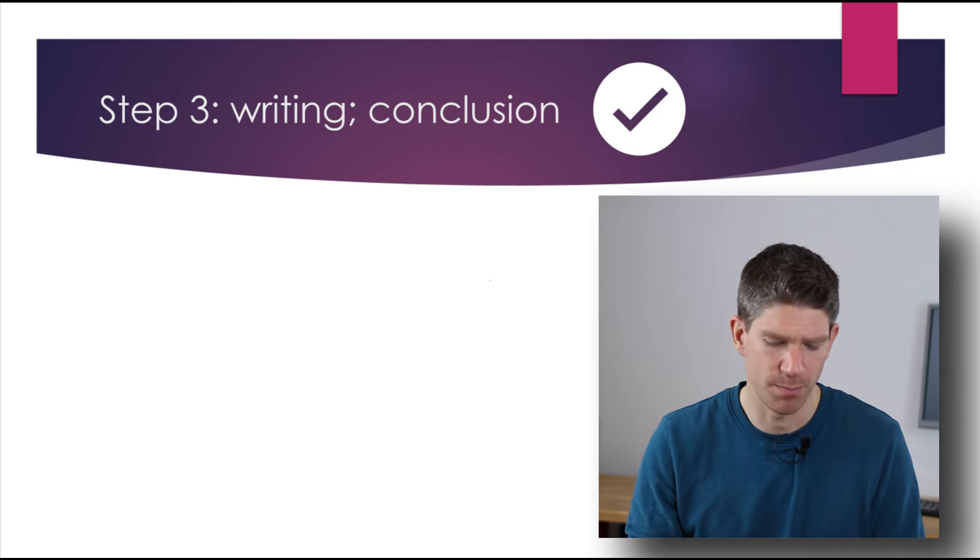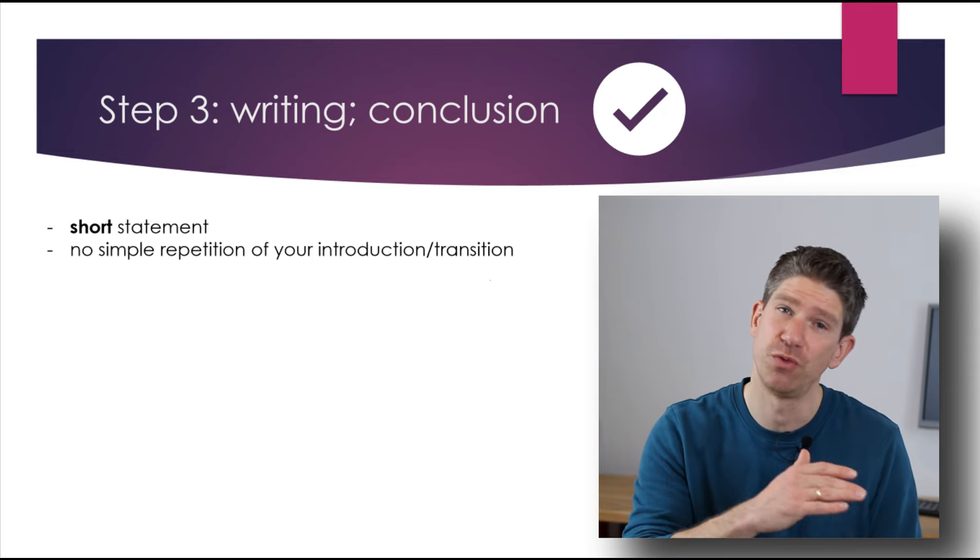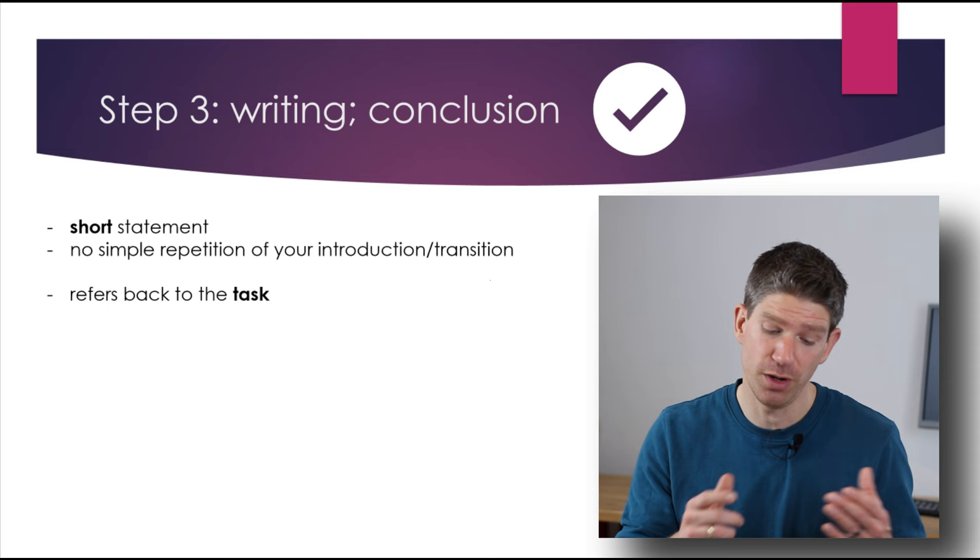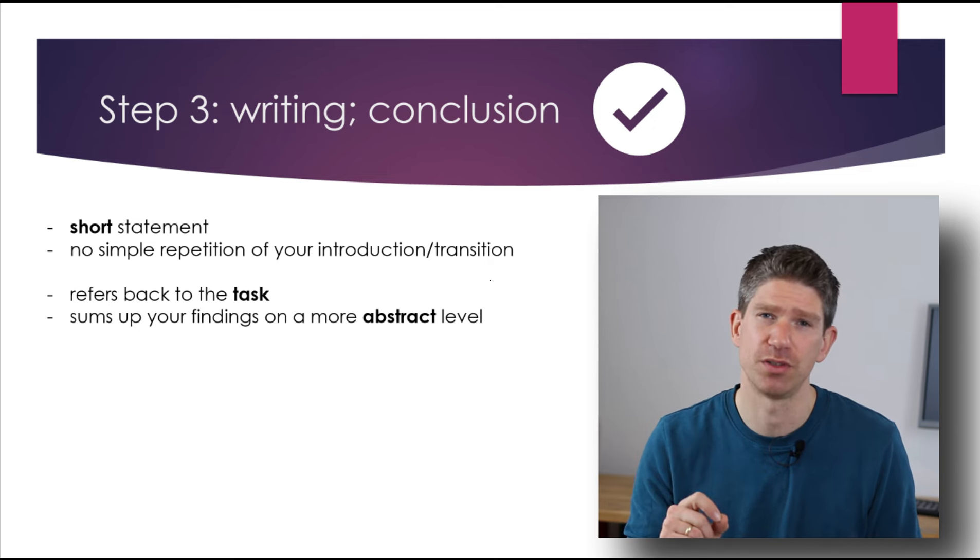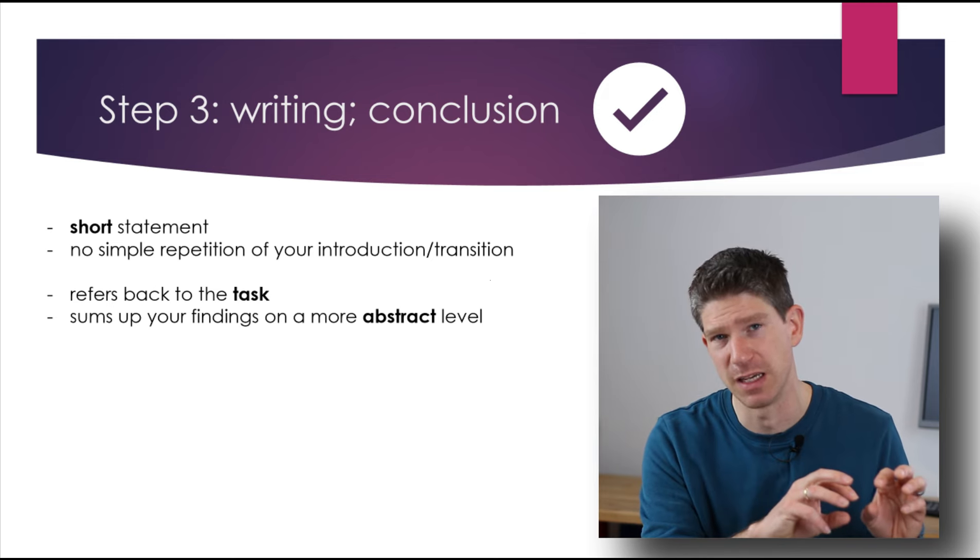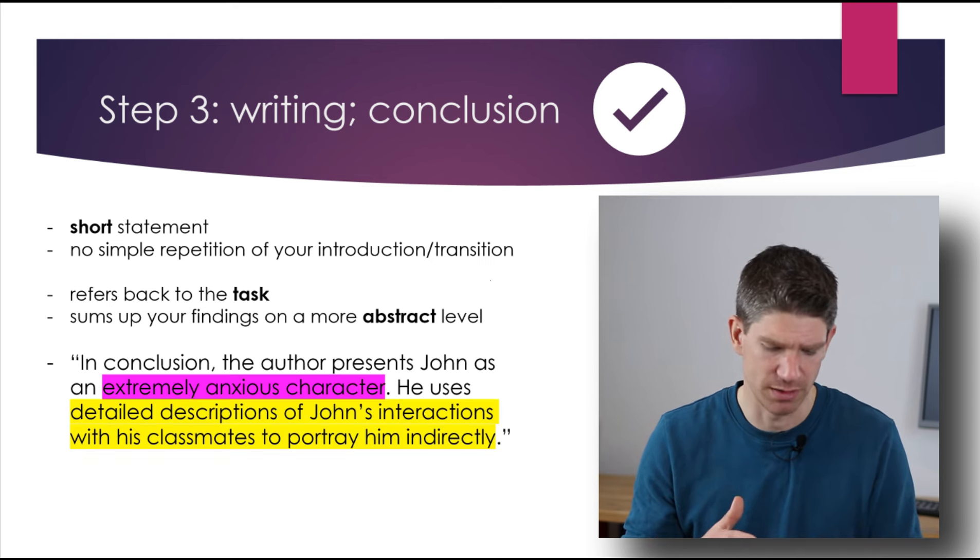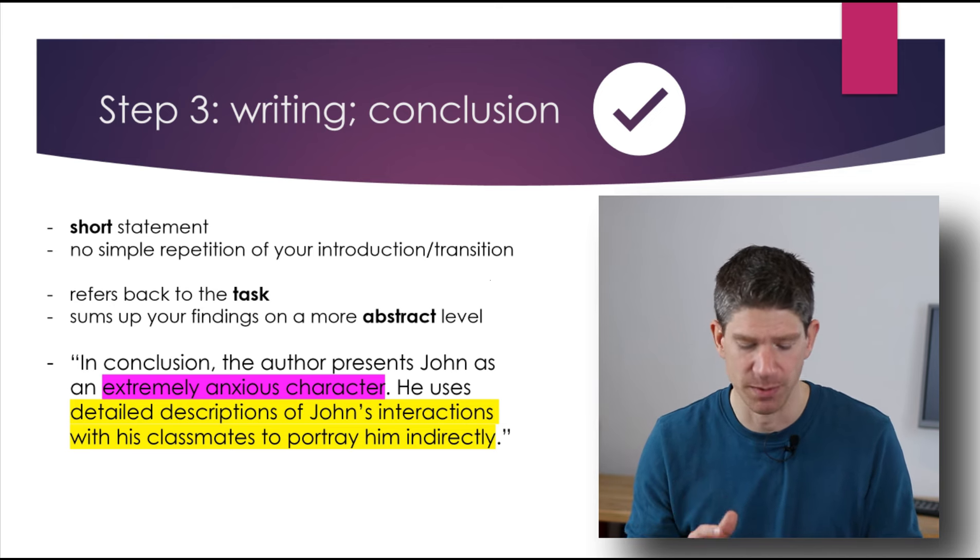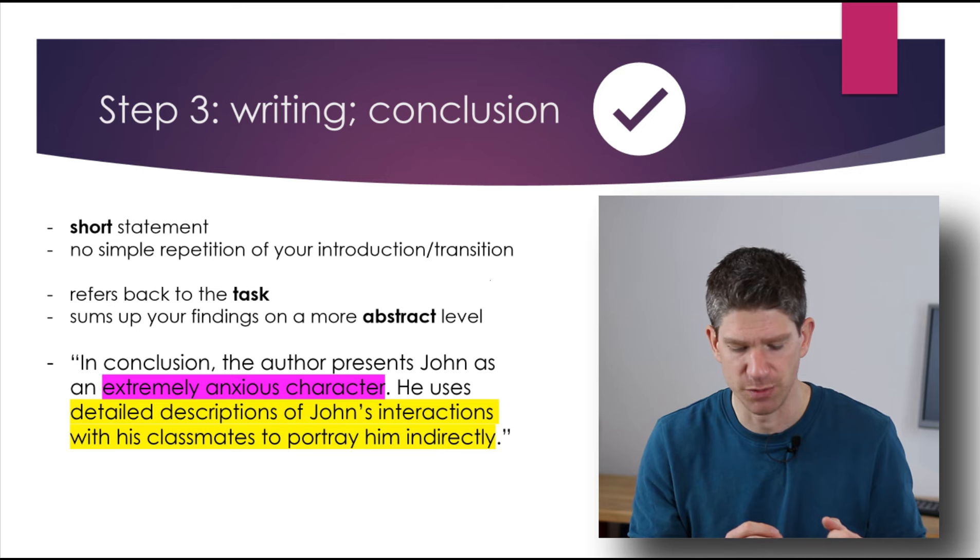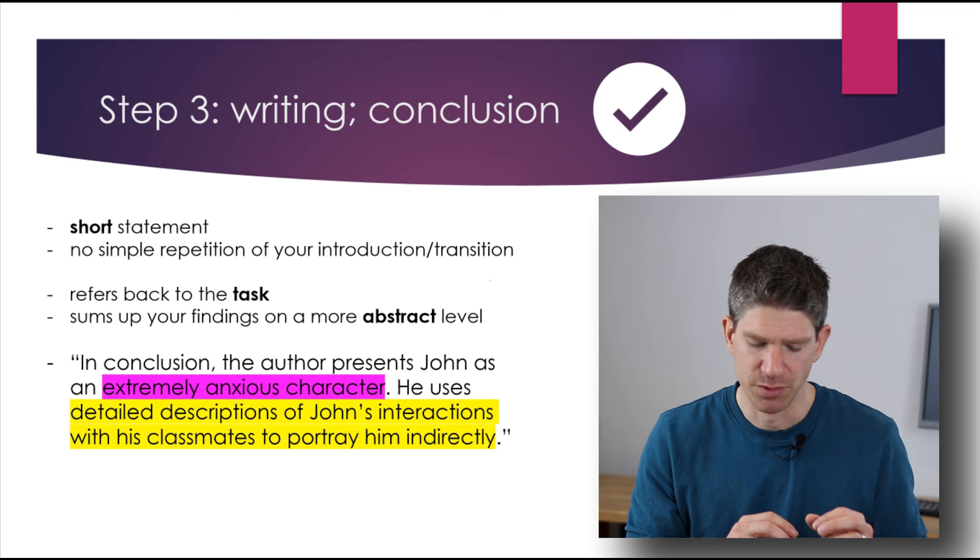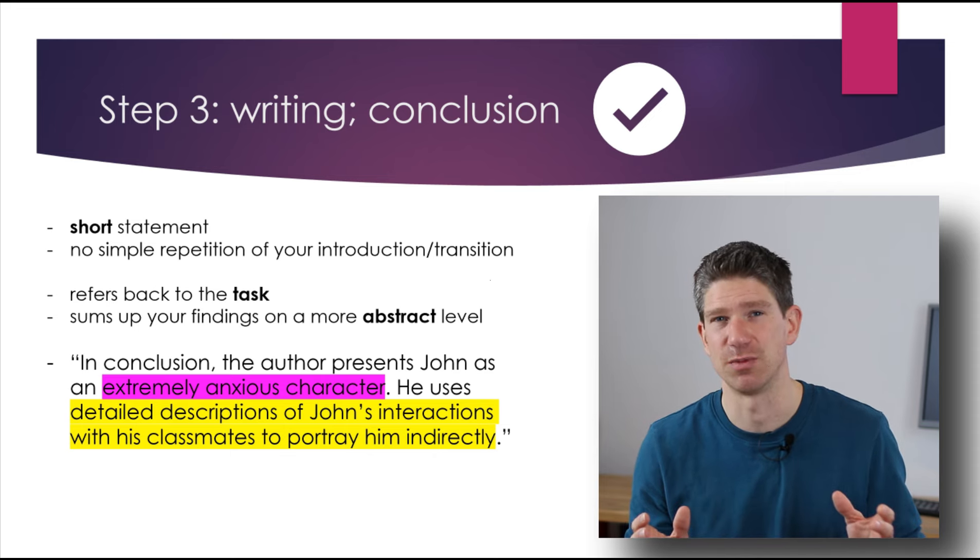You should also have a conclusion and my advice is to make the conclusion relatively short. It should not be a long text and it should not simply repeat what you've already written in the introduction, but it should rather refer back to the task, as also the introduction does admittedly, but sum up what you found out about this person on a more abstract level. So don't use the exact terms you had in the beginning, but use terms that show that you've considered a number of aspects. It's hard to describe this without an example. So let me give you an example here. In conclusion, the author presents John as an extremely anxious character. So this is the main character trait I would say in conclusion of all the things I've talked about him I would give. He uses detailed descriptions of John's interactions with his classmates to portray him indirectly. So yes, the author uses both direct and indirect characterization, but to describe him indirectly, he uses these interactions with his classmates as an example.